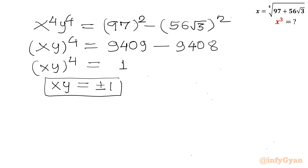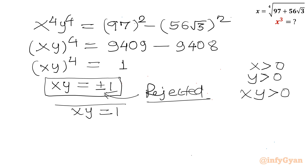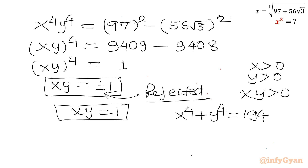Taking the 4th root of both sides: since x is positive and y is positive, xy will always be positive. So we reject the minus sign, and xy equals 1. From our first equation x power 4 plus y power 4 equals 194, and since xy equals 1, we get y equal to 1 over x.